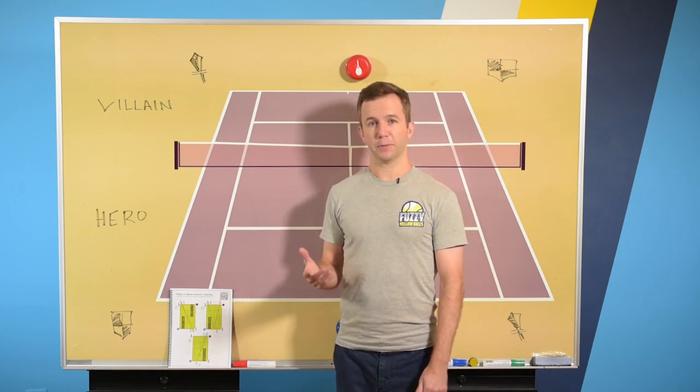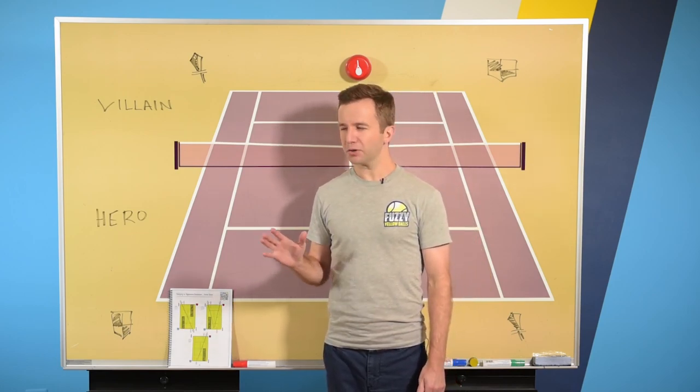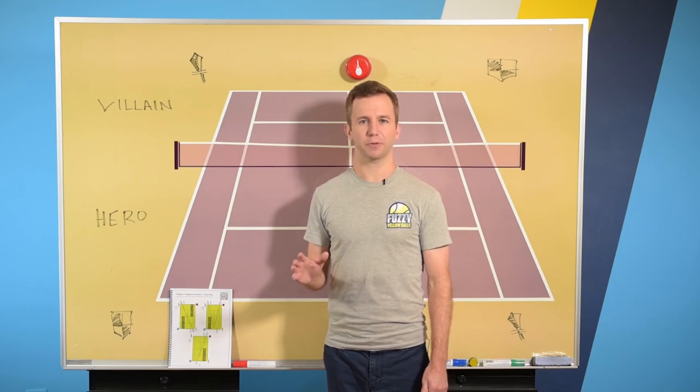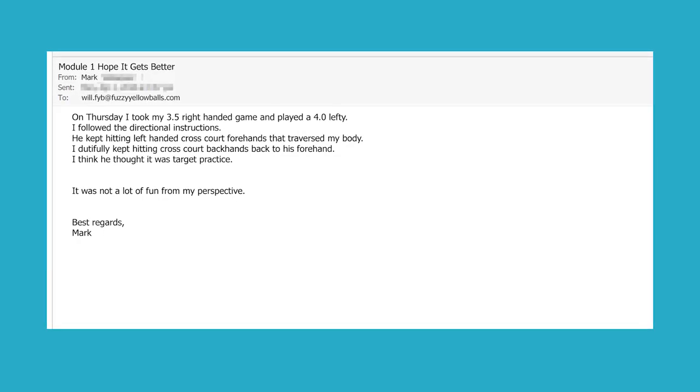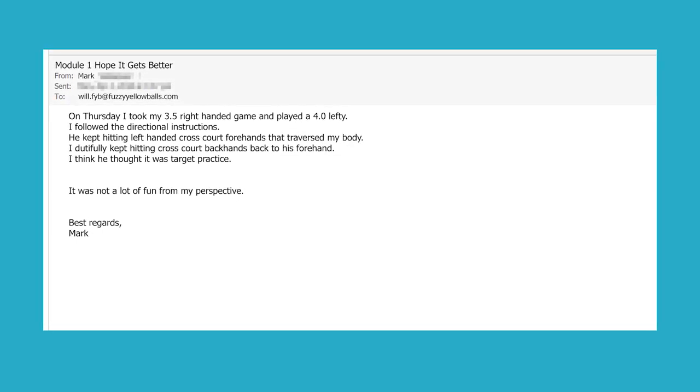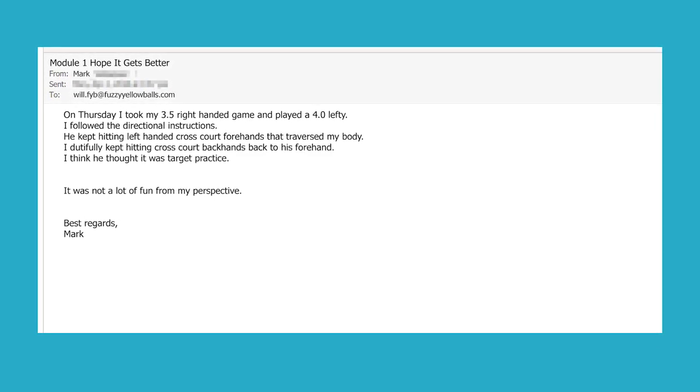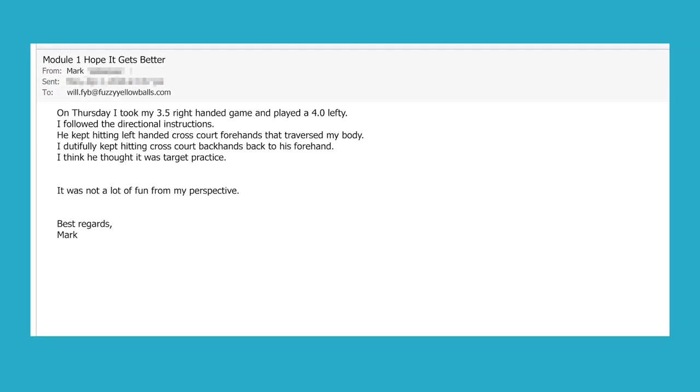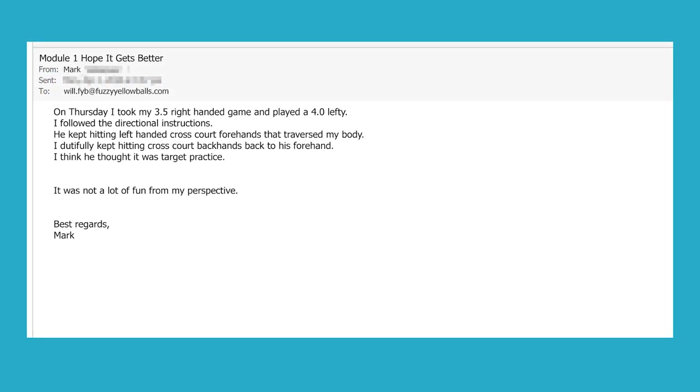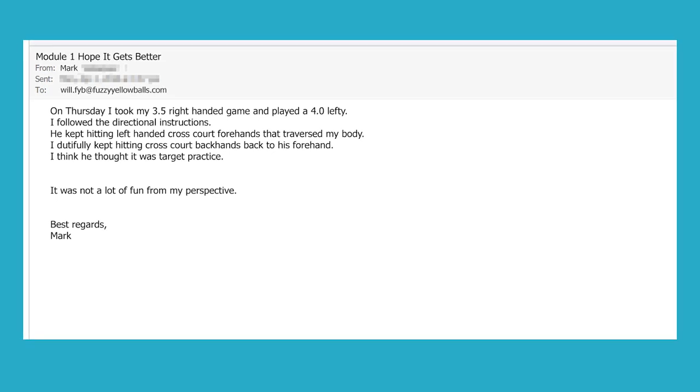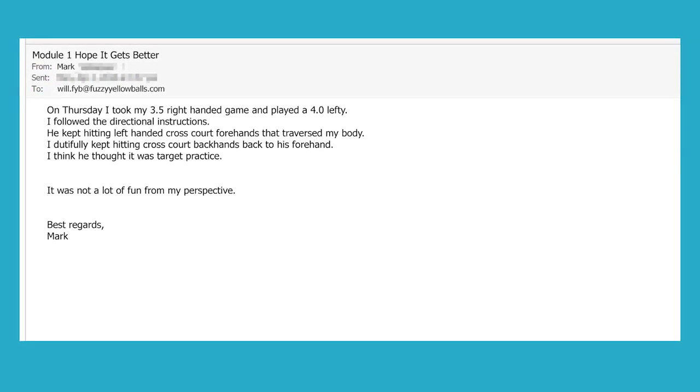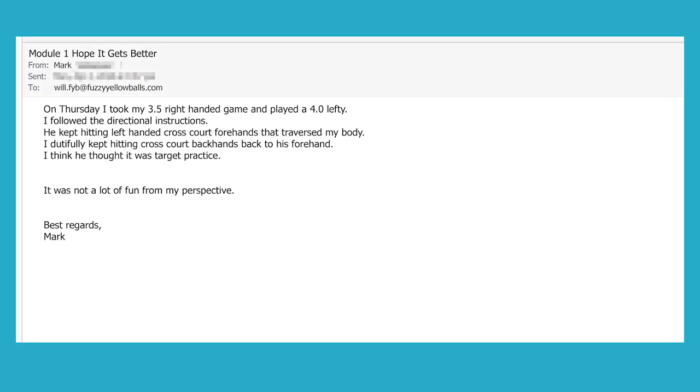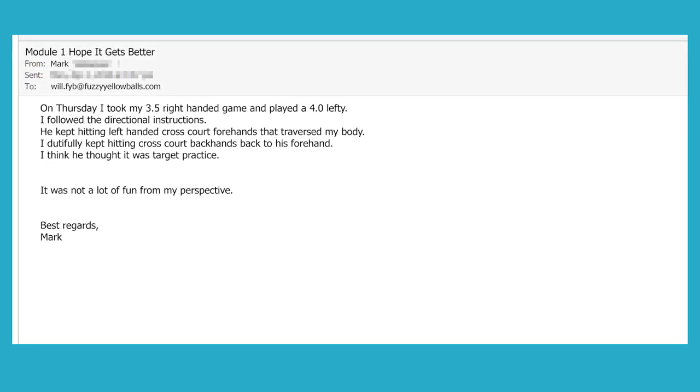But I also got an email from a guy named Mark, and Mark didn't have quite as much success running Home Base. He writes, On Thursday, I took my 3-5 right-handed game and played a 4-0 lefty. I followed the directional instructions. He kept hitting left-handed cross-court forehands that traversed my body. I dutifully kept hitting cross-court backhands back to his forehand. I think he thought it was target practice. It was not a lot of fun from my perspective. Best regards, Mark.